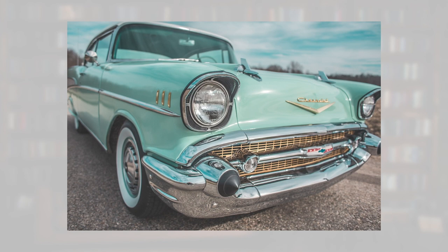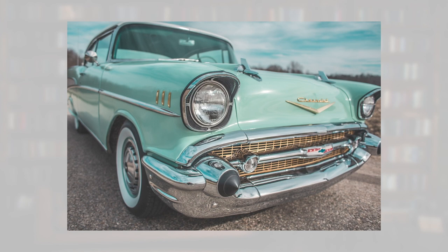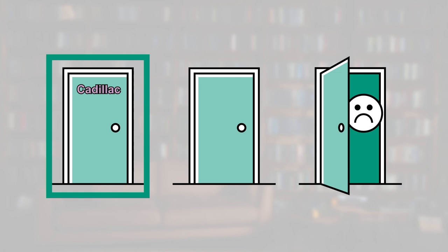Behind the other two doors there was nothing. You picked one of the three closed doors in the first round. Then Monty Hall came in and opened one of the other two doors and showed that there was no Cadillac behind it. But then he asked you if you wanted to stick with your original choice or if you wanted to change it. For years, almost everyone assumed it didn't matter, because now there was a choice of two closed doors, so the odds must be 50-50.